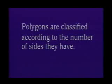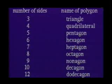Polygons are classified according to the number of sides they have. The polygons that are not included in the following list have no special names and are called n-gons, where n is the number of sides. For example, a polygon with 20 sides is called a 20-gon.